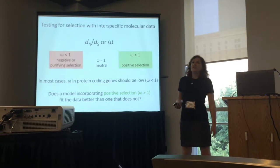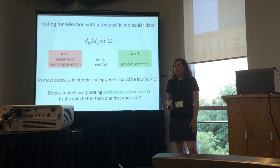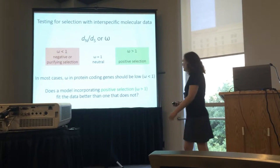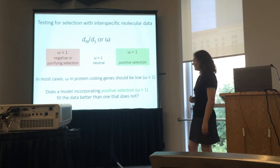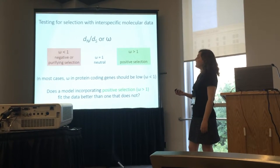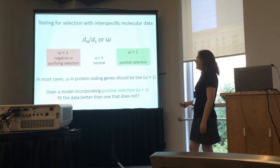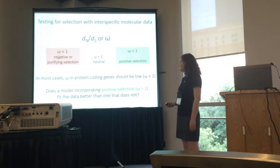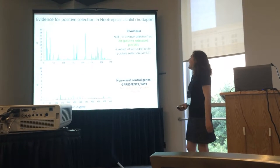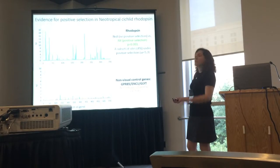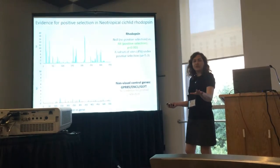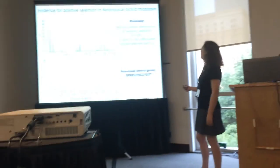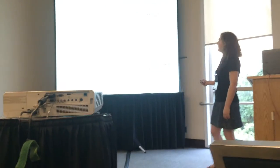However, in some cases we see positive selection in certain genes — for example, ecologically relevant genes and sensory genes. We can ask whether the model incorporating positive selection fits our data better than one that doesn't. And when I look across the entire neotropical cichlid rhodopsin tree, we do in fact have positive selection in a subset of sites.